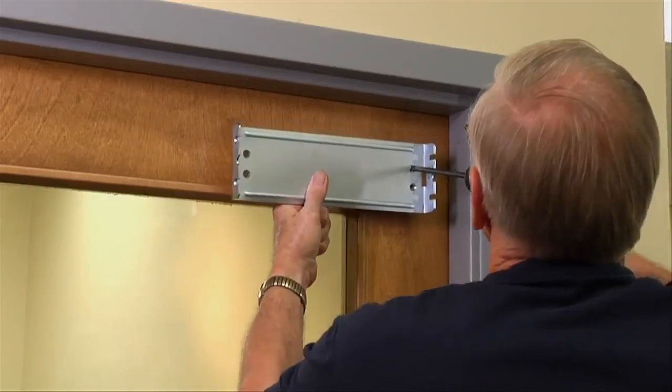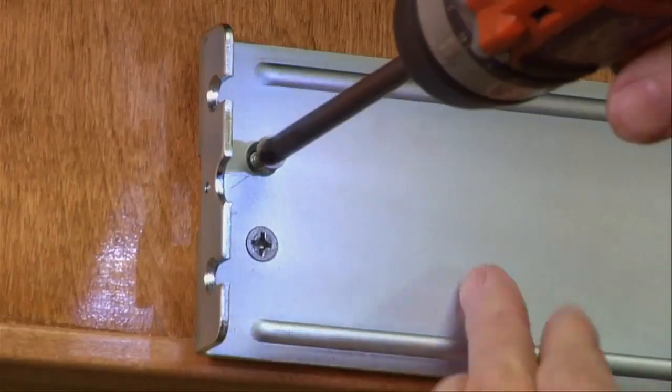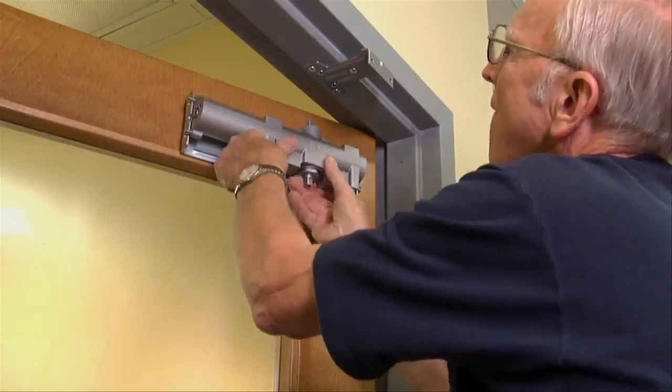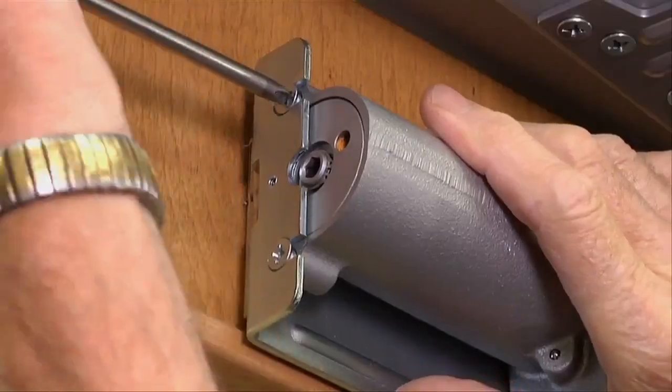Another unique feature for our cast iron closer is an independent mounting bracket. This bracket allows easy and accurate alignment. Simply install the bracket and attach the door closer.